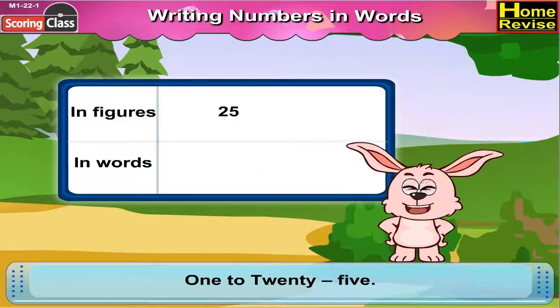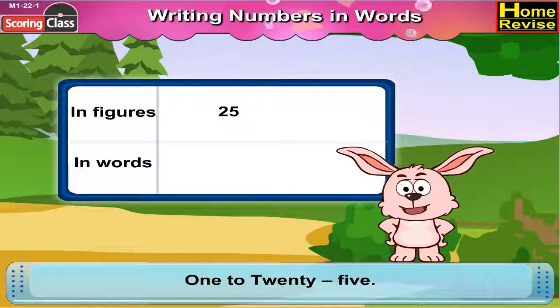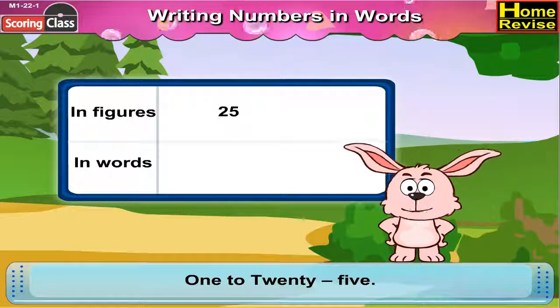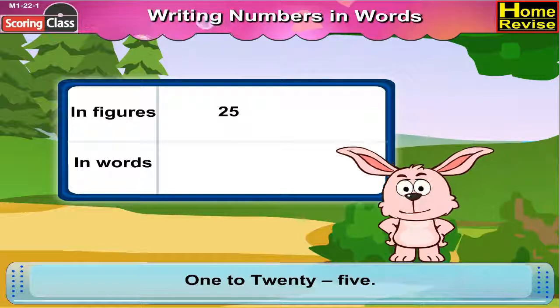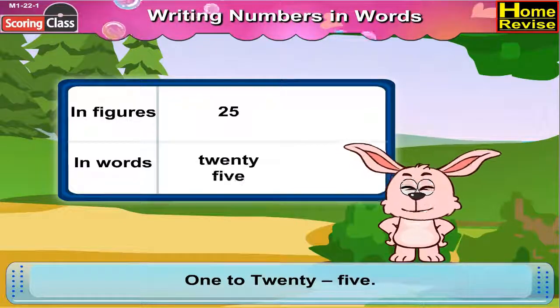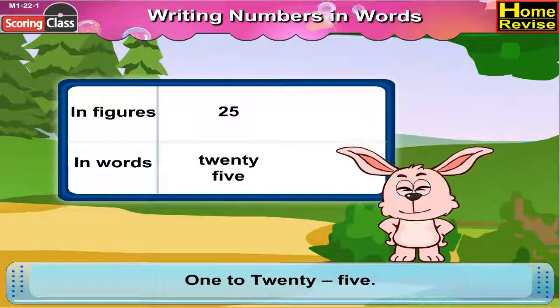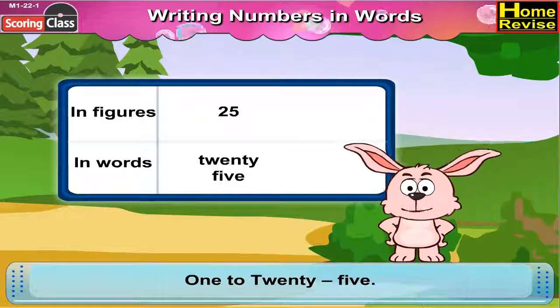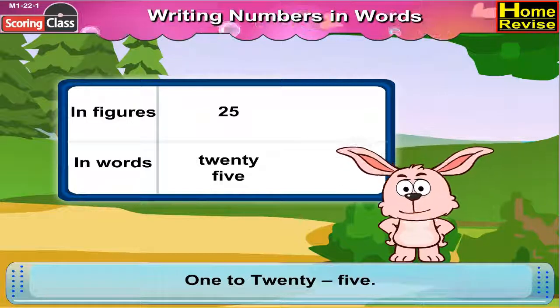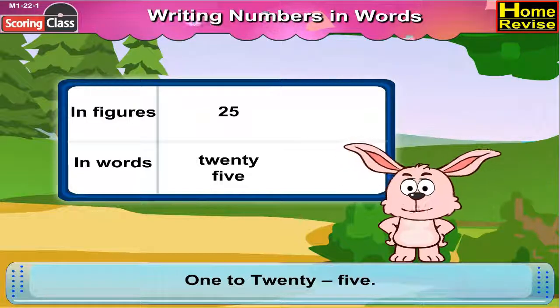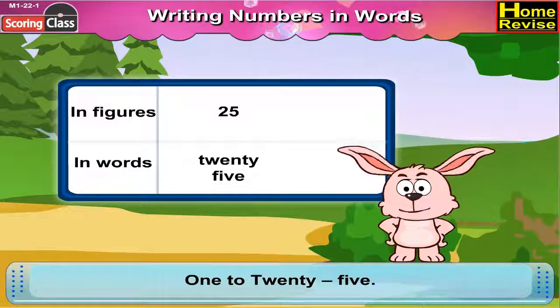25 in figure is 2, 5. In words it is T, W, E, N, T, Y, F, I, V, E.